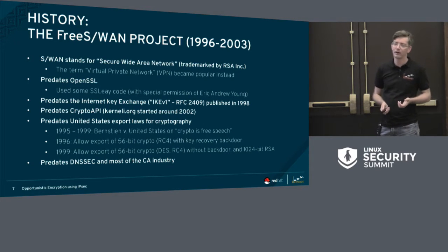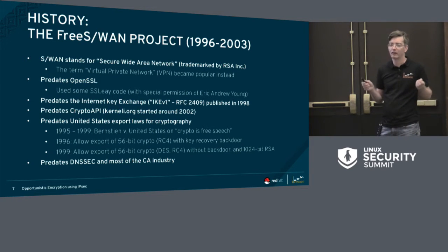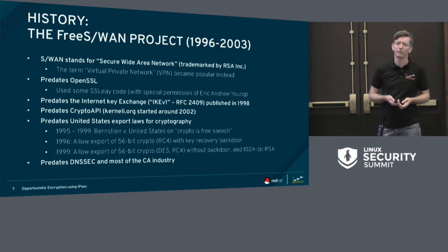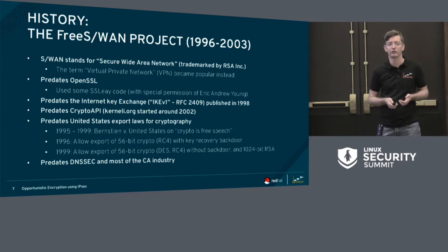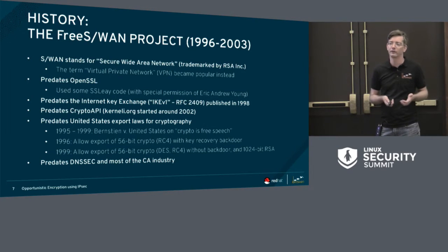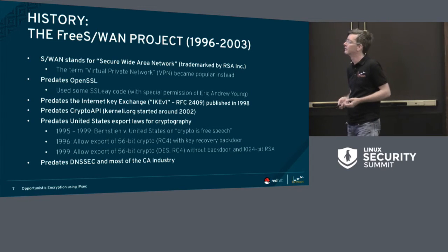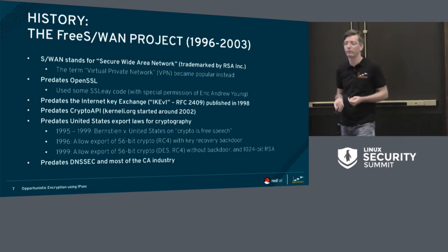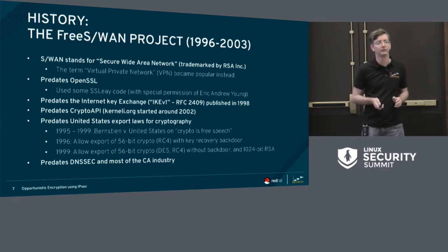SWAN stands for Secure Wide Area Network. It was trademarked by RSA, so people stopped using it, and instead the term VPN became the common term everybody started using. The project predates OpenSSL, so all crypto had to be written from scratch. There's also a famous quote from Gilmore that the NSA tried to slow down the project and add too many features. I think the quote is a little out of context — we were really our own worst enemy, a designed-by-committee kind of thing. It also predates the crypto API, export laws, and all these things.